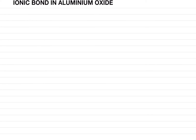Ionic bond in aluminium oxide. The first step is to find the electronic configuration of aluminium and oxygen. Aluminium (Al) has 13 electrons, so its electronic configuration is 2, 8, 3 — valence electron is 3. Oxygen has atomic number 8, so its configuration is 2 and 6. So oxygen needs two electrons to complete its shell, whereas aluminium has three extra electrons.